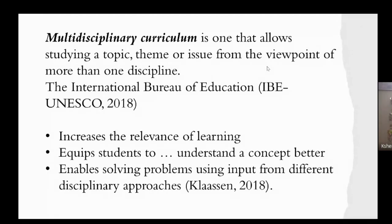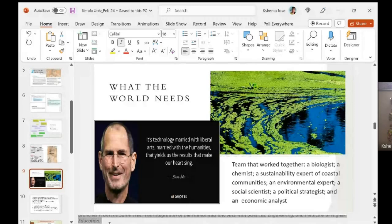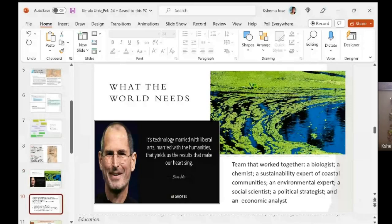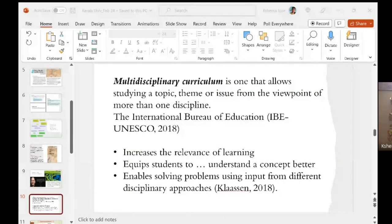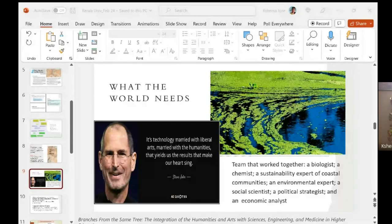There is also a 2018 report from the joint task force of the National Academies of Sciences, Engineering, and Medicine that I'd like you to read — it will help you understand more about multidisciplinary curriculum. We are all familiar with STEM subjects; there is now increasing consideration of adding arts to STEM, so it becomes STEAM — science, technology, engineering, arts, and medicine. This is what multidisciplinarity is all about.